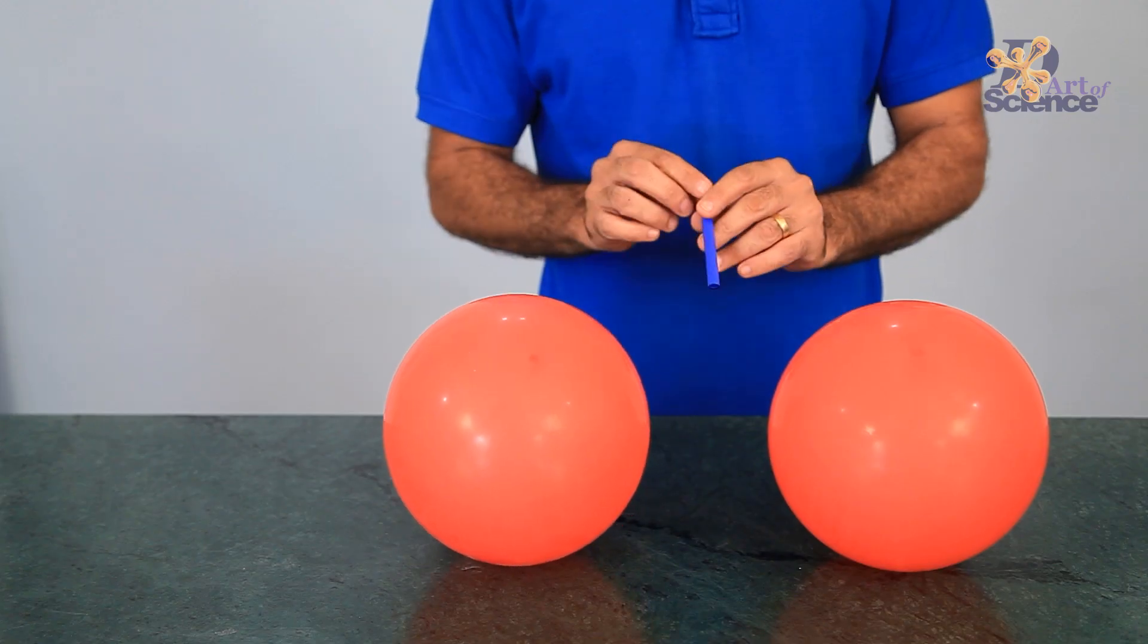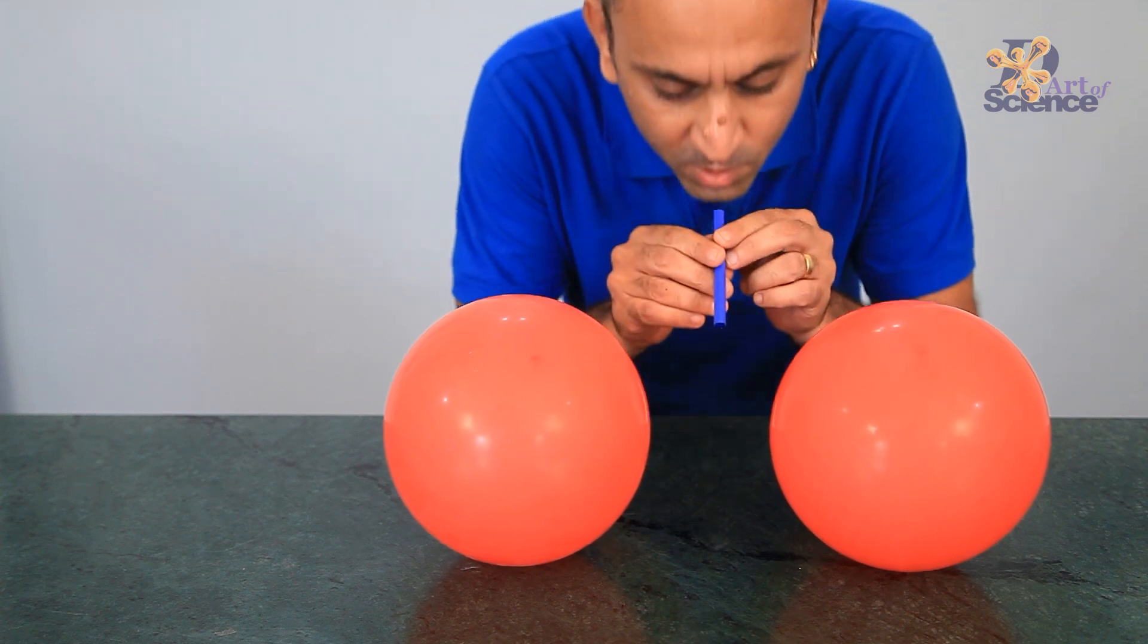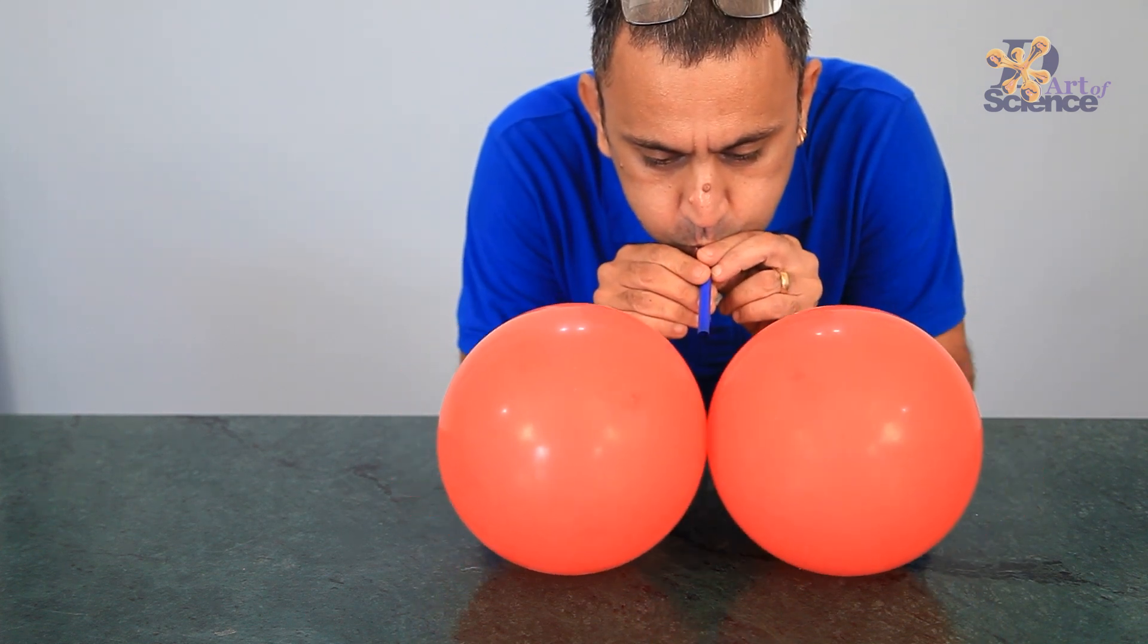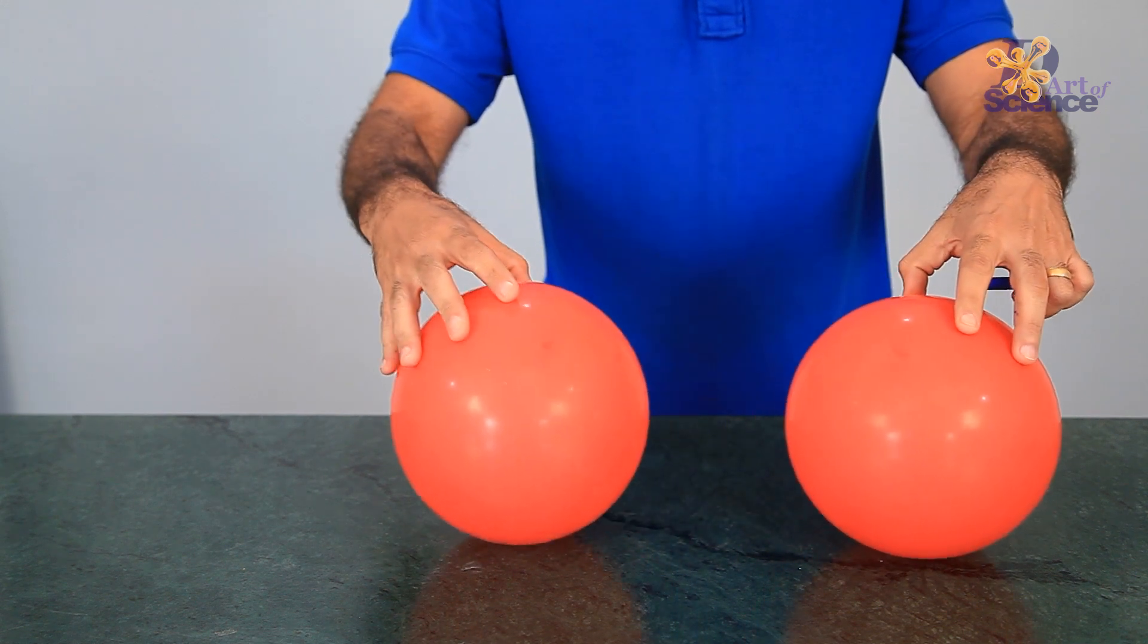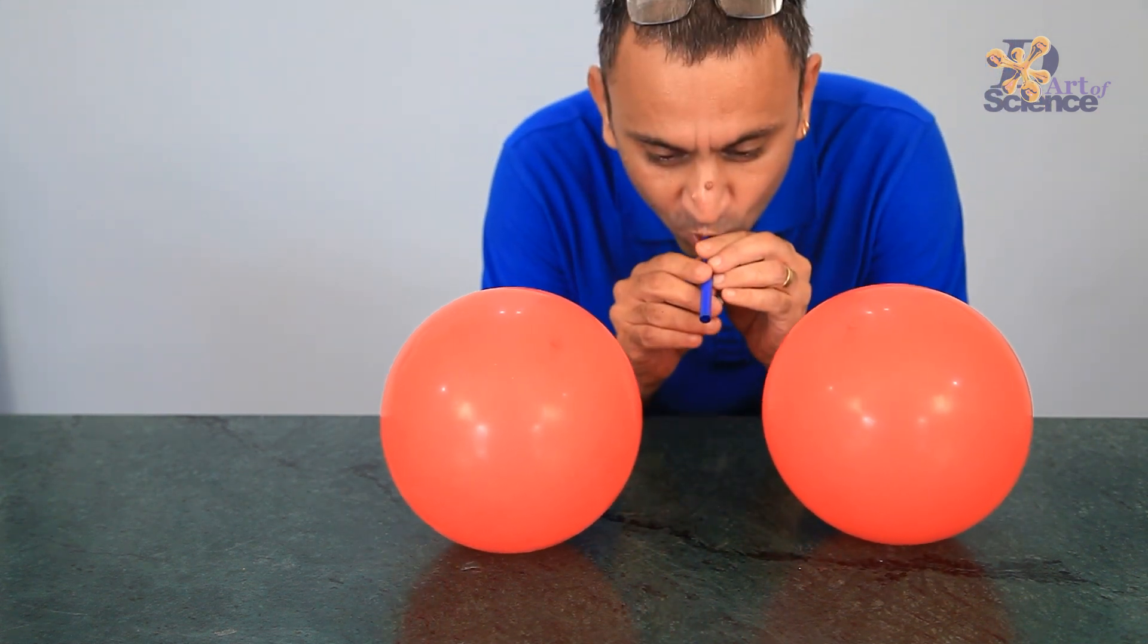The same applies when we blow air between two balloons. The low pressure is between the balloons and the higher pressure acts from the sides towards the center and pushes the balloons closer.